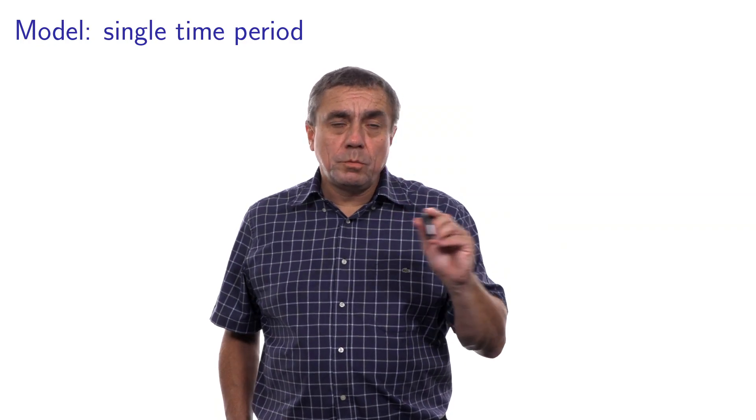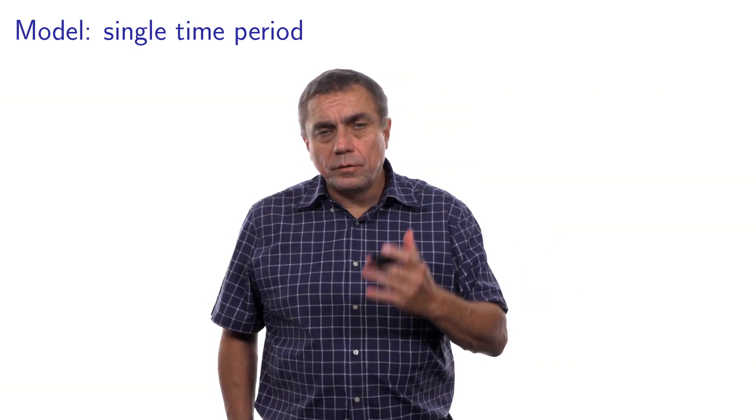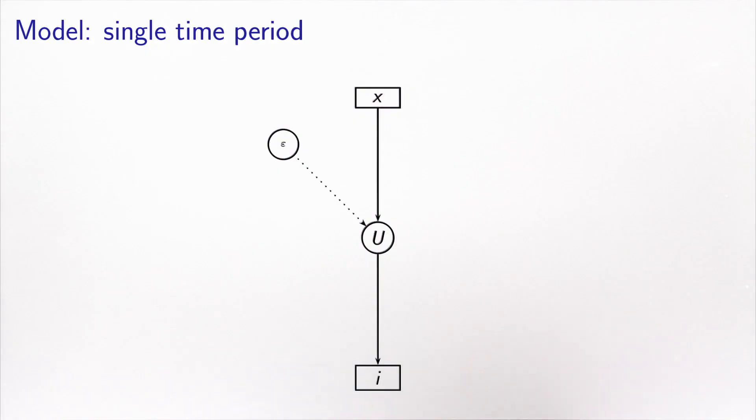In the video about latent variables, I introduced a drawing convention for the variables in my model. The idea is that an oval shape represents a latent variable. In this case, this is the utility. The rectangular shape represents the observed variable. We have x, which are the explanatory variables, and i, which is the dependent variable, the choice. Then we have the error term epsilon.